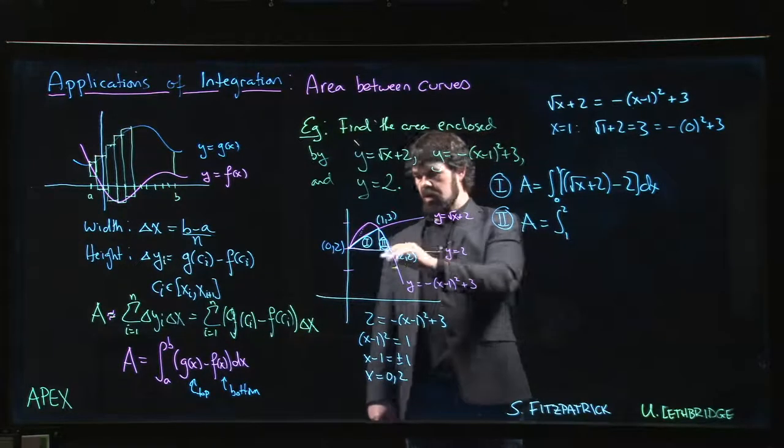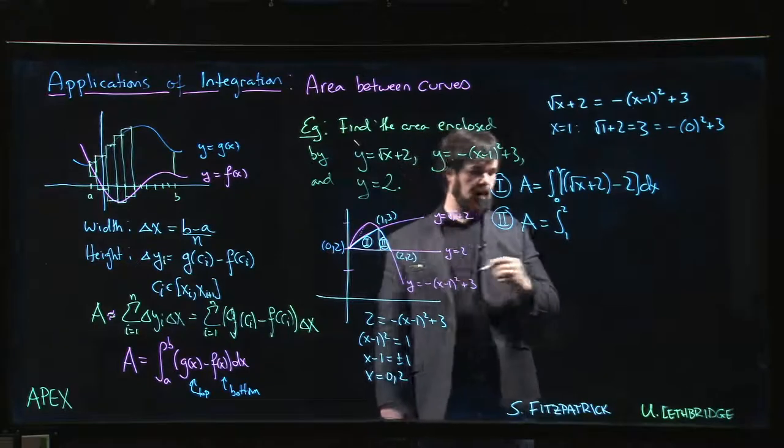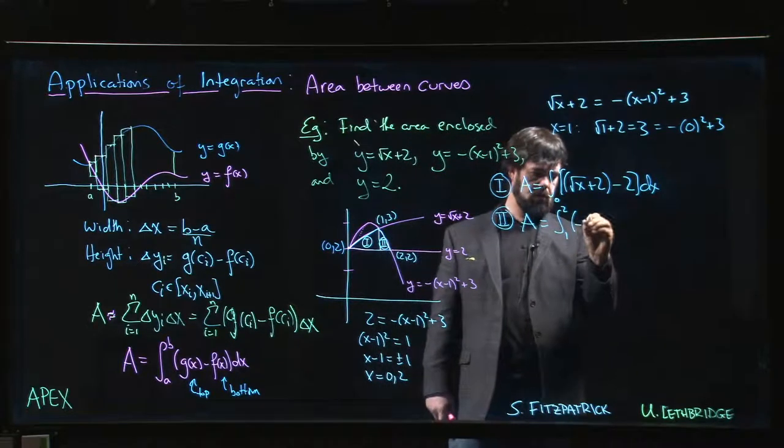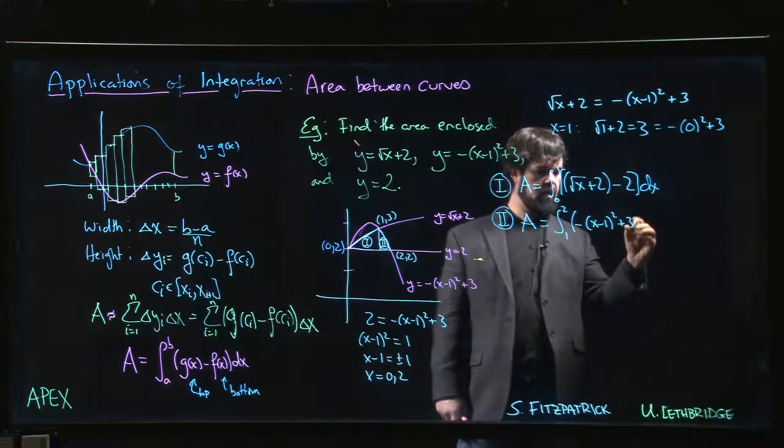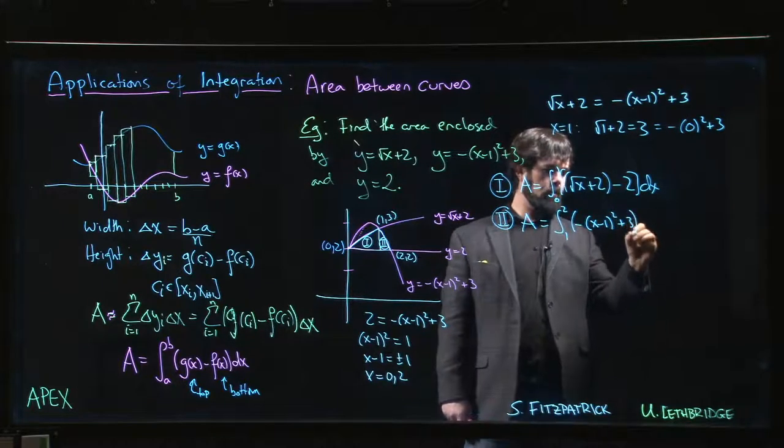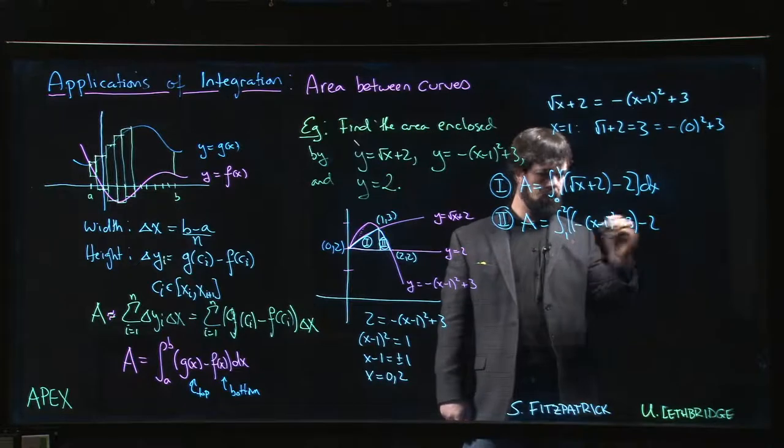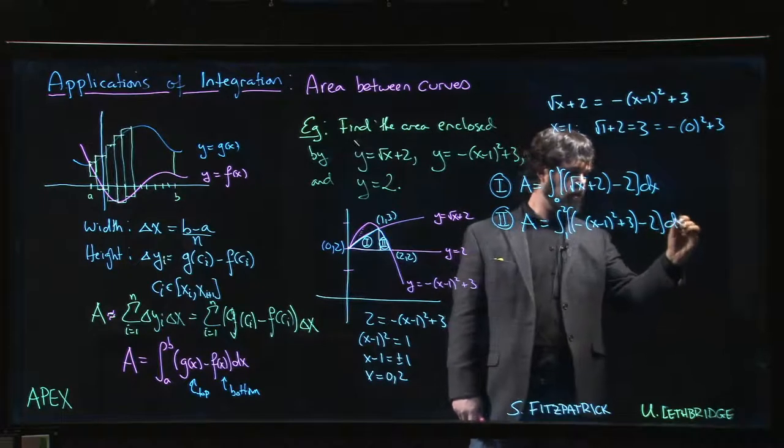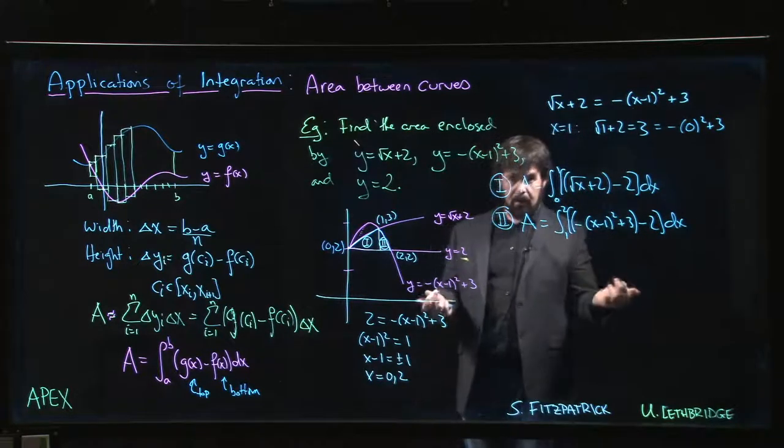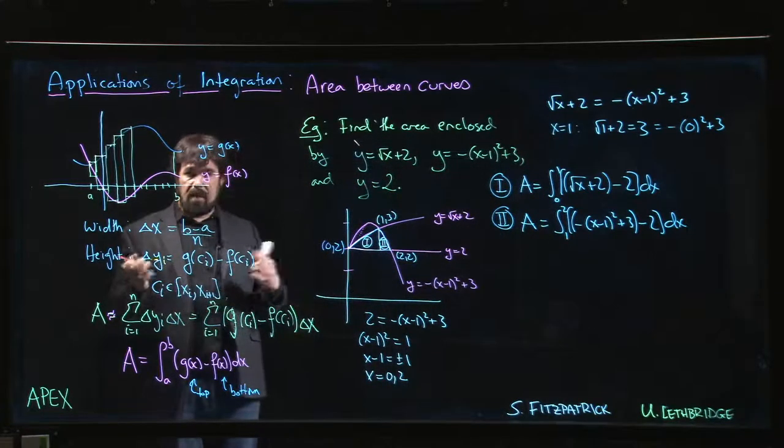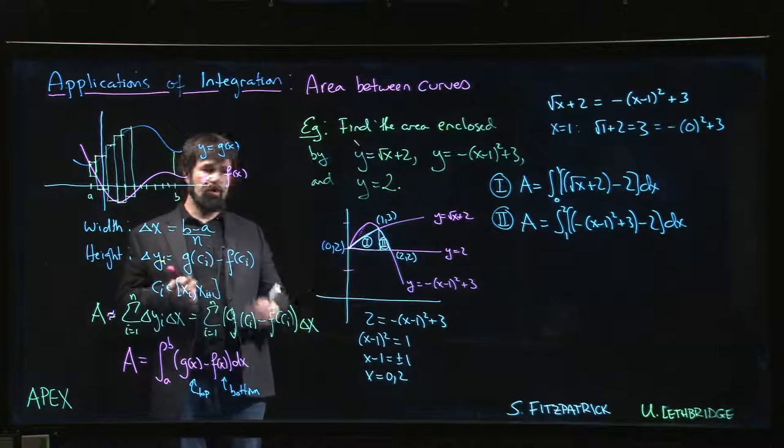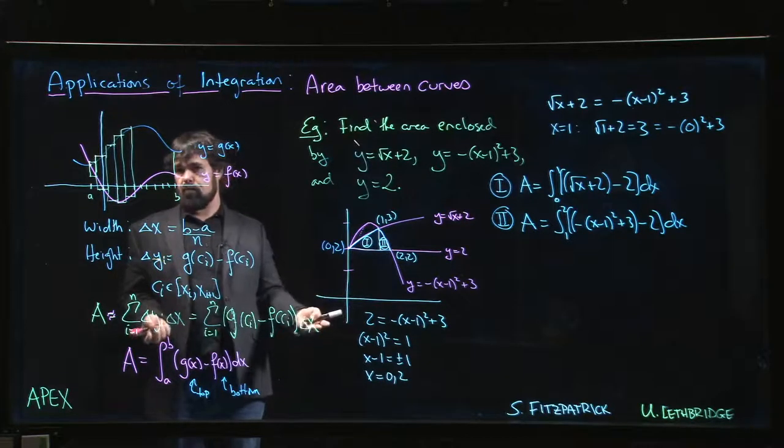Second one, area is the integral from 1 to 2. Now the upper curve is our parabola, so we have to do -(x-1)² + 3 subtract 2. And again that's not so bad, we can simplify, we can clean it up and we get our answer. So that's one way you can do it. You can calculate those two integrals, get the values, add the two numbers and you have the area.